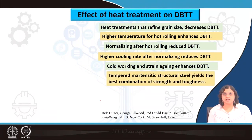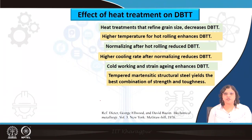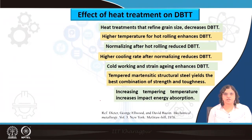For martensitic steels, we prefer to perform some kind of tempering operations, which yields the best combination of strength and toughness. Often we cannot obtain the maximum value of strength or maximum value of toughness because in most cases these two are inversely related. We have to deal with an optimum combination of properties when we perform the tempering. Increasing the tempering temperature also increases the impact energy absorption.